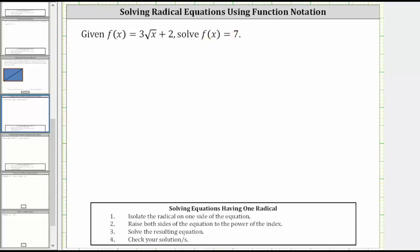Because we are asked to solve f of x equals seven, we substitute seven for f of x here and solve the resulting radical equation. So substituting seven gives us the equation seven equals three times the square root of x plus two.